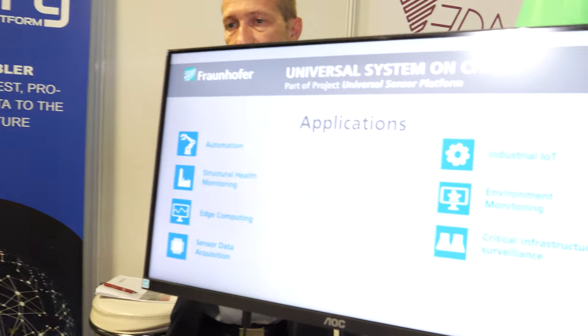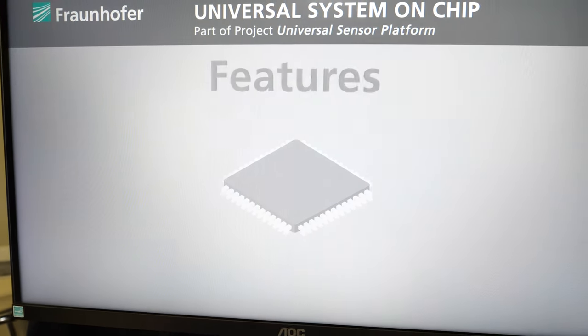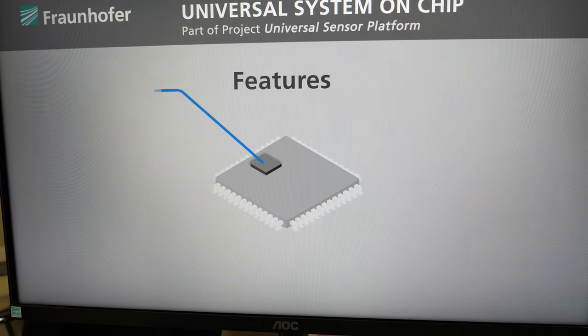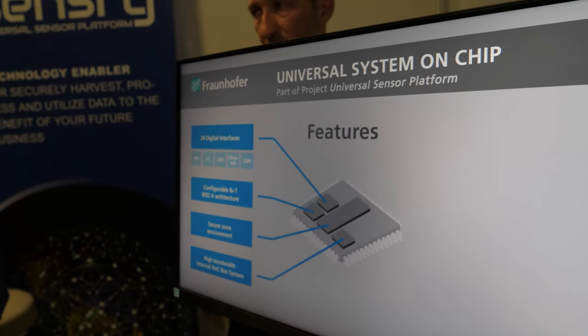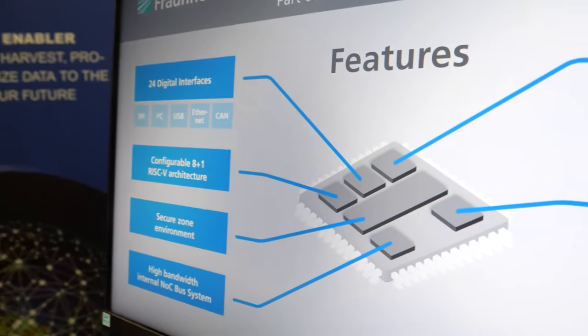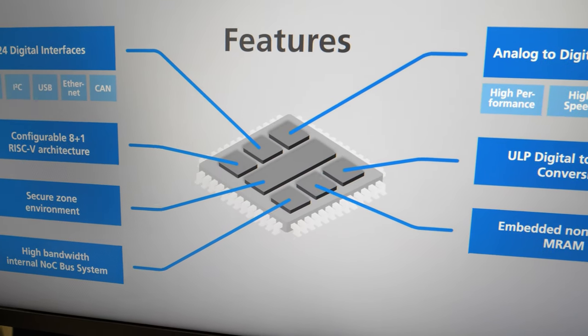Did Fraunhofer make chips before? Yes of course there are some institutes which are dealing with silicon. Usually they don't use ARM chips. Sometimes they produce or develop for example sensors like MEMS sensors.